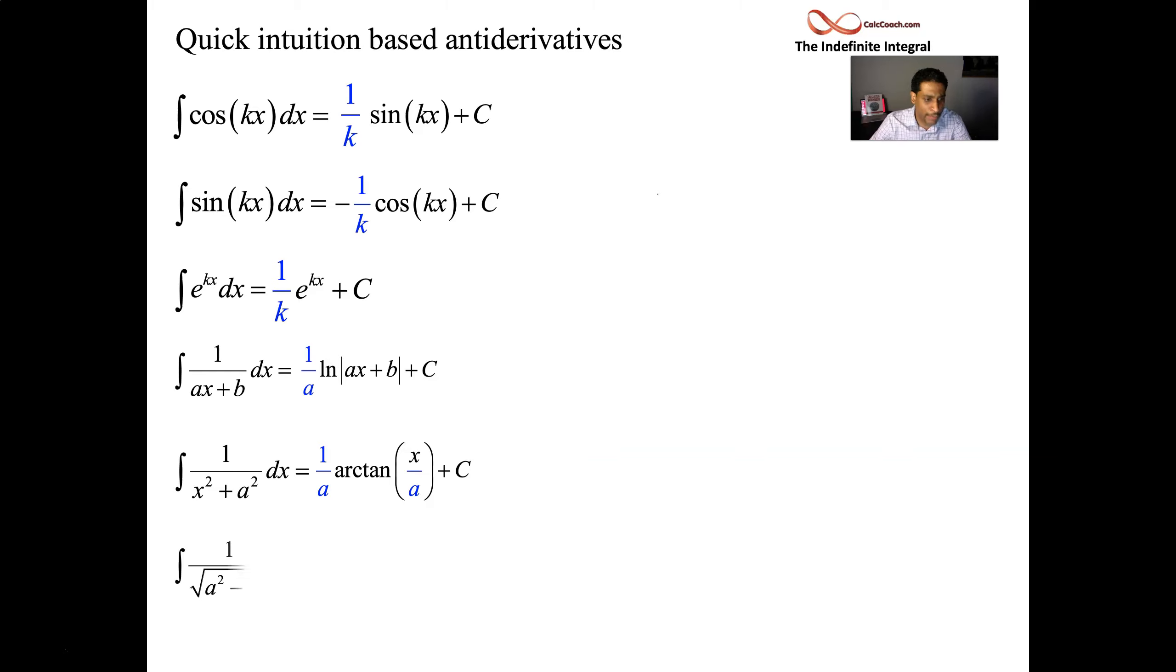And then with the radical, that looks like an arctan but it's not. This one, the 1 over a is actually not a part of the multiplier out front. It's still a part of the inside though. Just check it for yourself. Take the derivative of the right-hand side. You'll get the left hand, what's inside the integral.